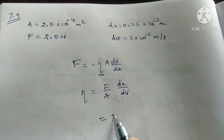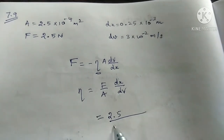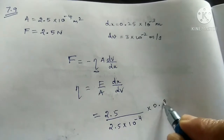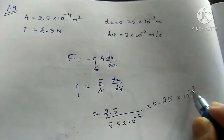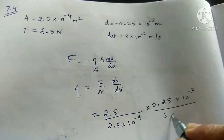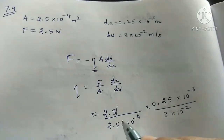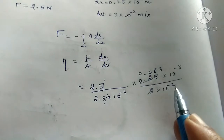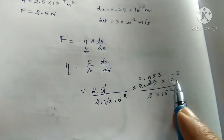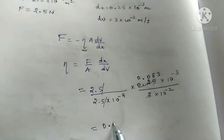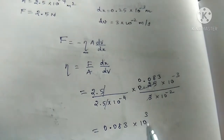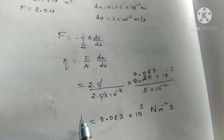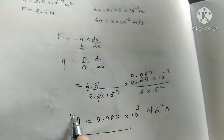Substituting the values: F = 2.5 N, A = 2.5 × 10⁻⁴ m², dx = 0.25 × 10⁻³ m, and dv = 3 × 10⁻² m/s. After calculation, the result is 0.083 N·m⁻² ·s. That is the coefficient of viscosity of castor oil.